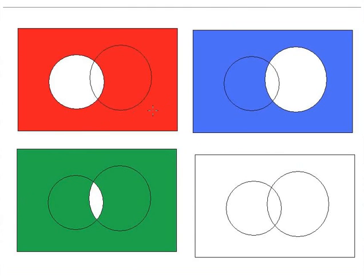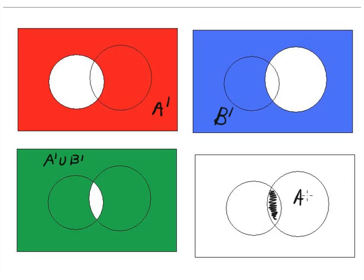To see it more clearly: A complement is completely outside A, B complement is completely outside B, and A complement union B complement is this and this together — everything except the intersection region A intersection B. This is confirmed using De Morgan's Law.